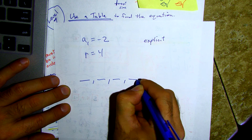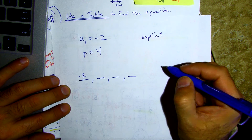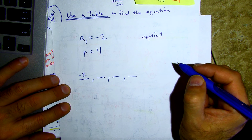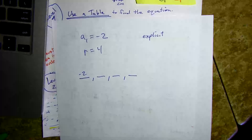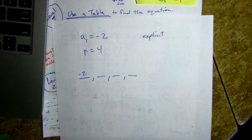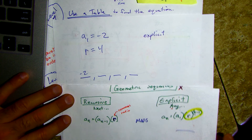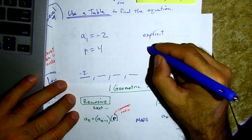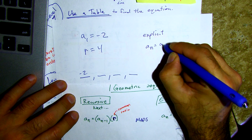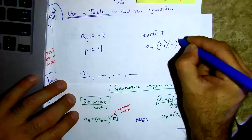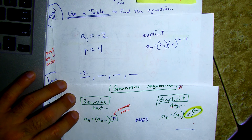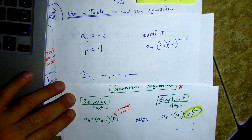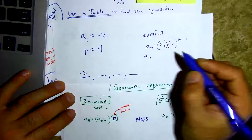For this we're talking about geometric sequences, so my explicit formula is: a sub n equals a sub one times r to the n minus one. We already know everything — it's negative two times four to the n minus one. We're just going to find a sub two, a sub three, and a sub four.